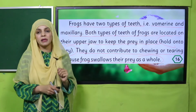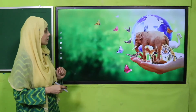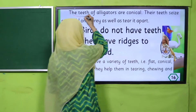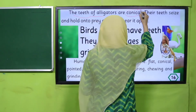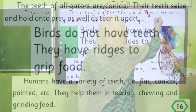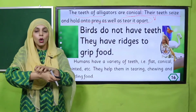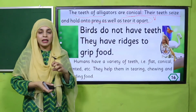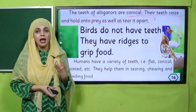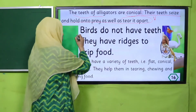The teeth of alligators are conical — is tarah ke hote hain, cone form mein. Their teeth seize and hold onto prey as well as tear it apart. Jo ek alligator hota hai, uske daant conical hote hain, nokeelay hote hain, aur yeh prey ko hold karte hain, usko tear bhi karte hain, aur chew karne mein help karte hain.